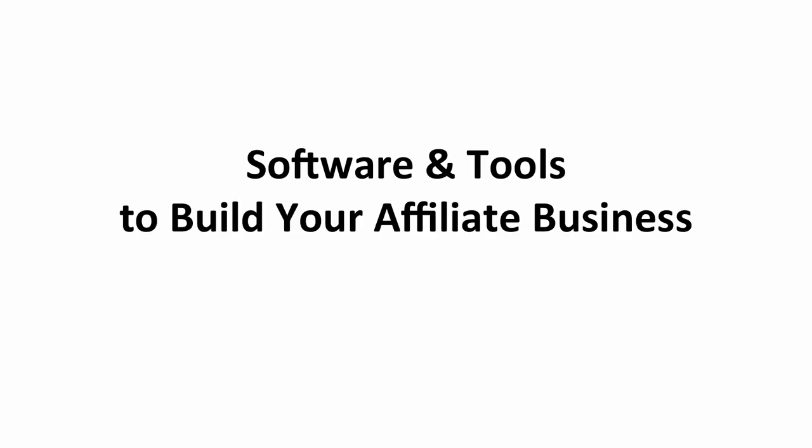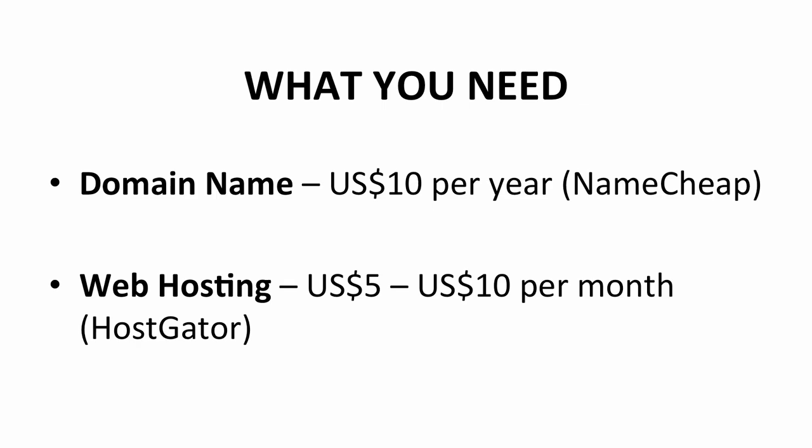Now, before you can begin, you'll need a few things to prepare. I will show you the software and tools you'll need to build your affiliate business. First of all, get a domain name for your website. You must create one and then register it. I would recommend using the Namecheap website, which offers domain name registration for 10 US dollars per year. This is where you need to be creative. After getting a domain name, it's time for you to find web hosting for your website. A web host is a storage space for your business and it also allows access for your buyers. For this, I recommend HostGator, and it costs between 5 and 10 US dollars per month.